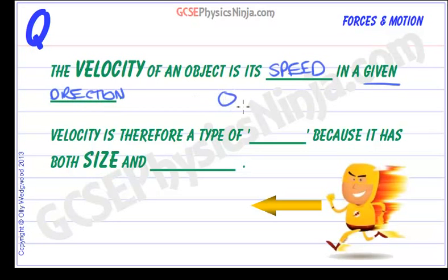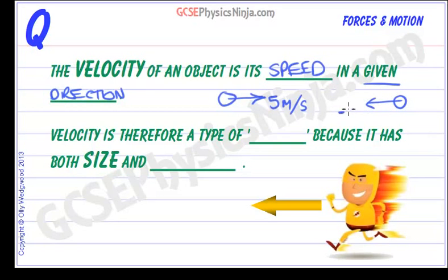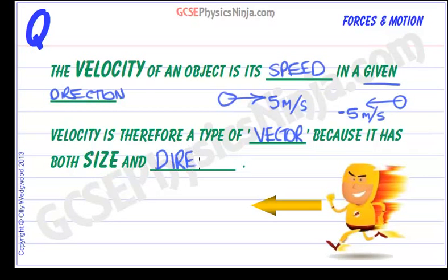So I could have a ball that's travelling east at 5 meters per second. If it was travelling west, I would describe its velocity as minus 5 meters per second because it's going in the opposite direction. And that's what we mean by a vector — direction matters. So velocity is therefore a type of vector because it has both size and direction.